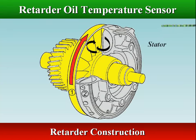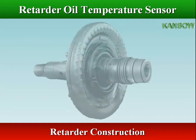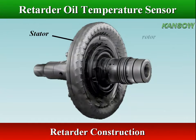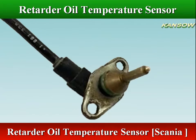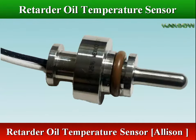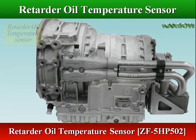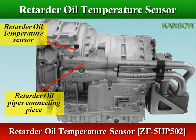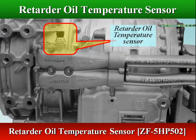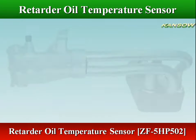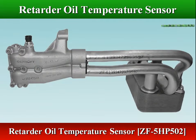The stator and the rotor are two turbines placed against each other; when oil is forced between them, a braking torque is generated. The stator is fixed-mounted to the retarder housing, while the rotor is mounted to an axle connected to the drive shaft through a set of gears. In ZF Ecomat II transmissions, the retarder oil temperature sensor is externally mounted in the retarder oil pipe connecting piece — the return line to the retarder oil cooler — which is bolted to the transmission housing.